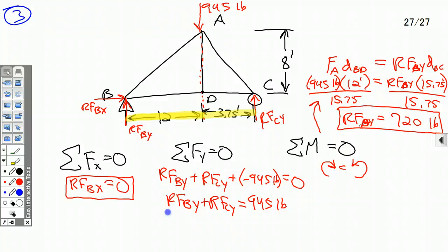Alright. RFB,Y. 720 pounds. Plus RFC,Y. Which we still don't know, but we're about to find out. So RFC,Y. Subtract 720 from both sides. We'll give you 945 minus 720 equals 225 pounds.